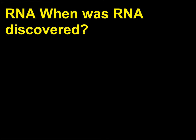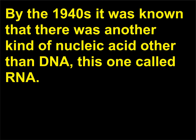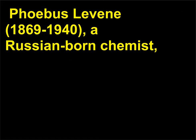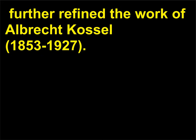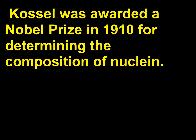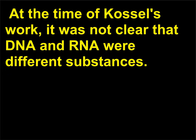When was RNA discovered? By the 1940s it was known that there was another kind of nucleic acid other than DNA, this one called RNA. Phoebus Levine, 1869-1940, a Russian-born chemist, further refined the work of Albrecht Kossel, 1853-1927. Kossel was awarded a Nobel Prize in 1910 for determining the composition of nucleon. At the time of Kossel's work, it was not clear that DNA and RNA were different substances.